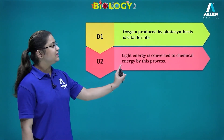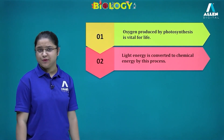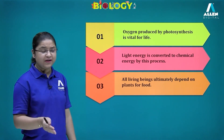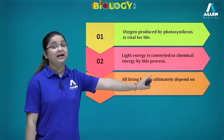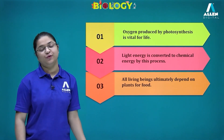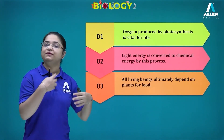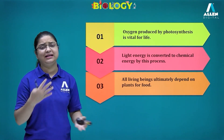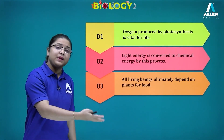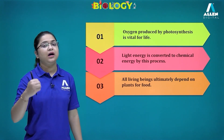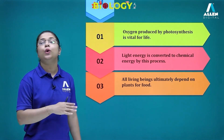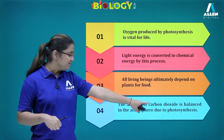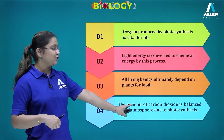Light energy is converted to chemical energy by this process. All living beings ultimately depend on plants for food. As we learned when discussing the food web, directly and indirectly, plants are the producers on which all animals depend.